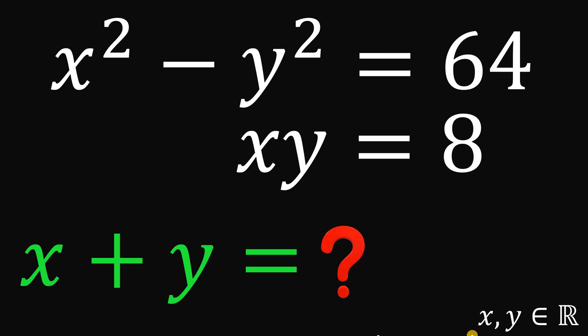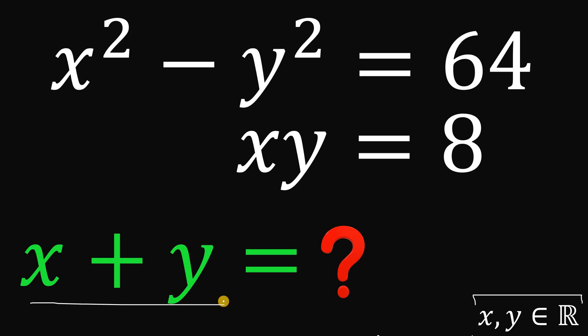For today's video, we will answer a math challenge given by one of our followers. The question goes like this: given these two equations, x squared minus y squared equals 64, and x times y equals 8, wherein x and y are both real numbers, our goal is to find the numerical value of x plus y. You can pause this video if you want to give this problem a try.